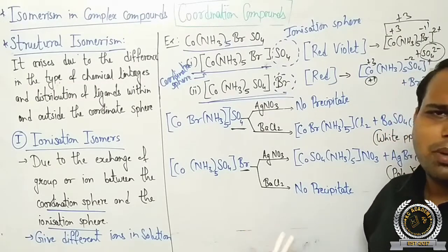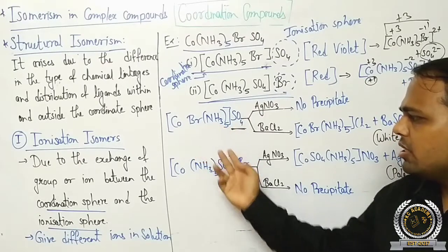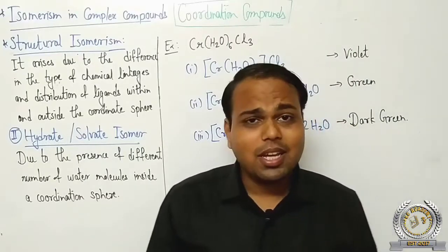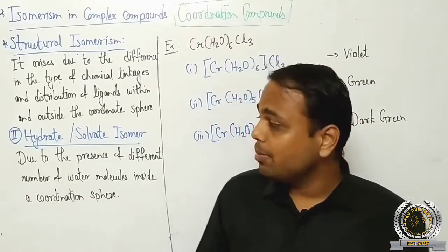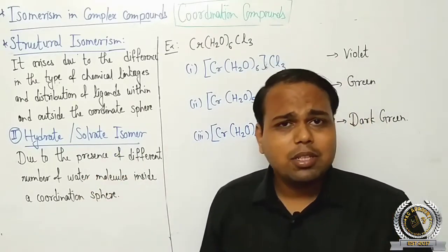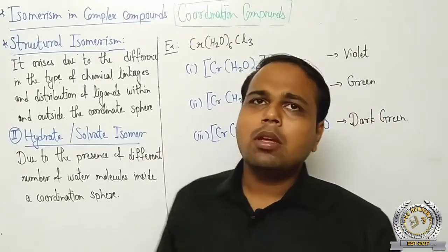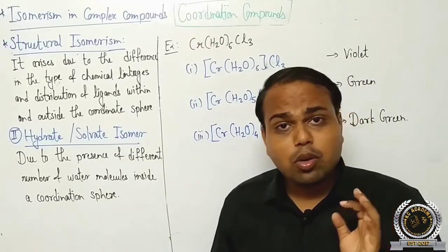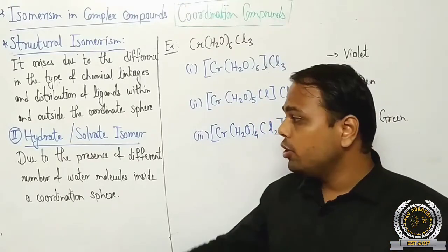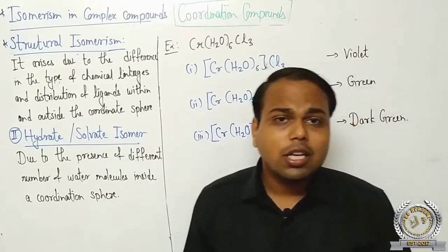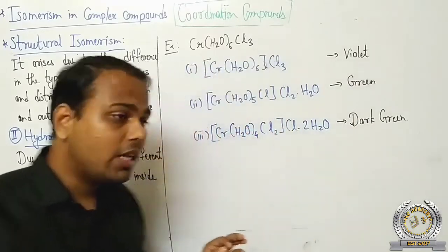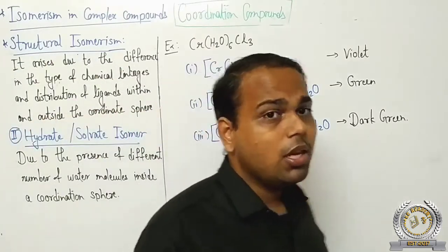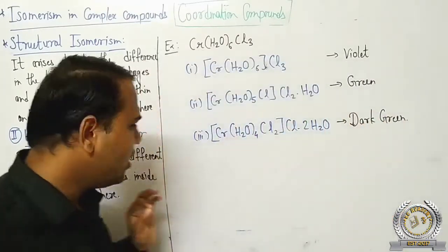Ionization isomers can be identified just by looking — by checking which group is inside and which is outside the coordination sphere। Second type of structural isomer: hydrate isomer, also called solvate isomer। 'Hydrate' means water। Depending on the number of water molecules inside versus outside the coordination sphere, the compound shows hydration isomers।